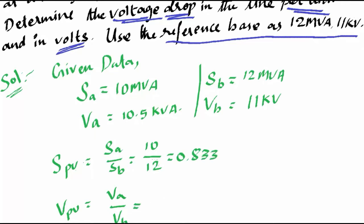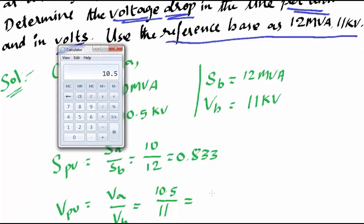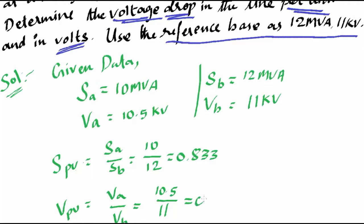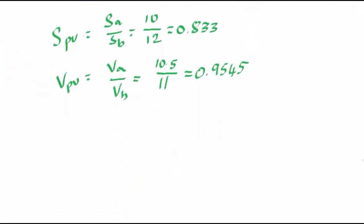...0.833. Then we also have to find out the voltage per unit. The actual voltage is 10.5 kV and the given base is 11 kV. Calculating 10.5 divided by 11 gives us 0.9545. So V per unit = 0.9545.